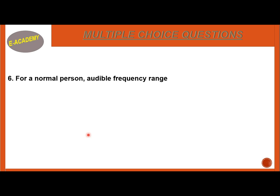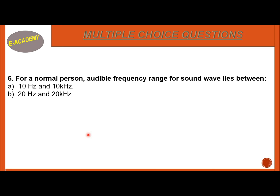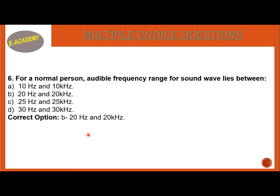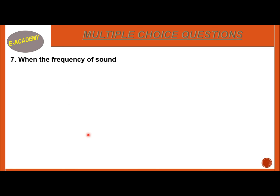Number 6: For a normal person, the audible frequency range for a sound wave lies between — 10Hz and 10kHz, 20Hz and 20kHz, 25Hz and 25kHz, or 30Hz and 30kHz. The correct option is B — 20Hz to 20kHz.